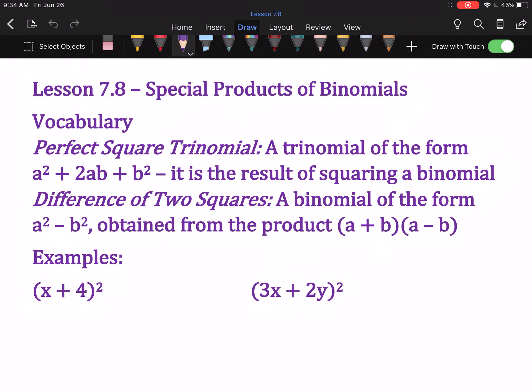All right, last lesson of chapter 7, special binomial products. So we're going to get some things here. A perfect square trinomial is a trinomial of the form a² + 2ab + b². It is the result of squaring a binomial.